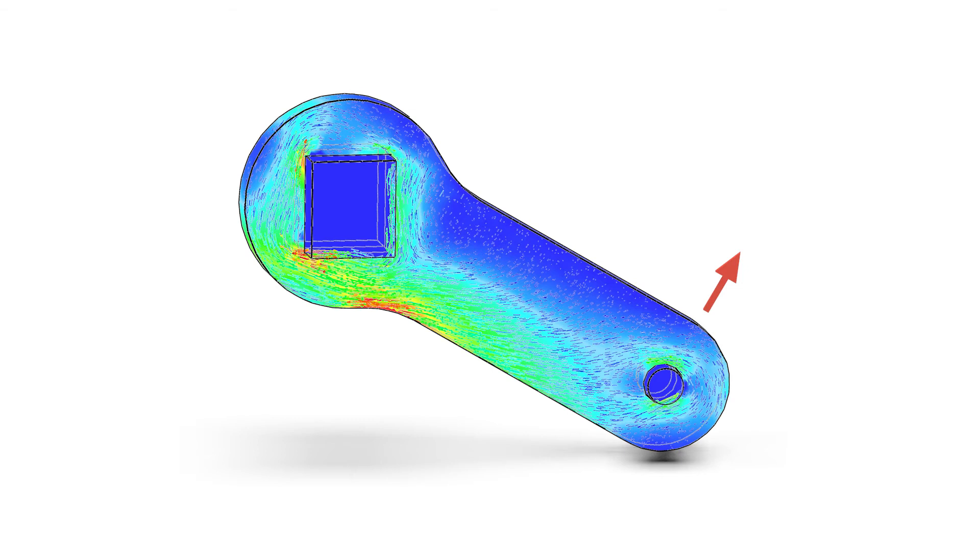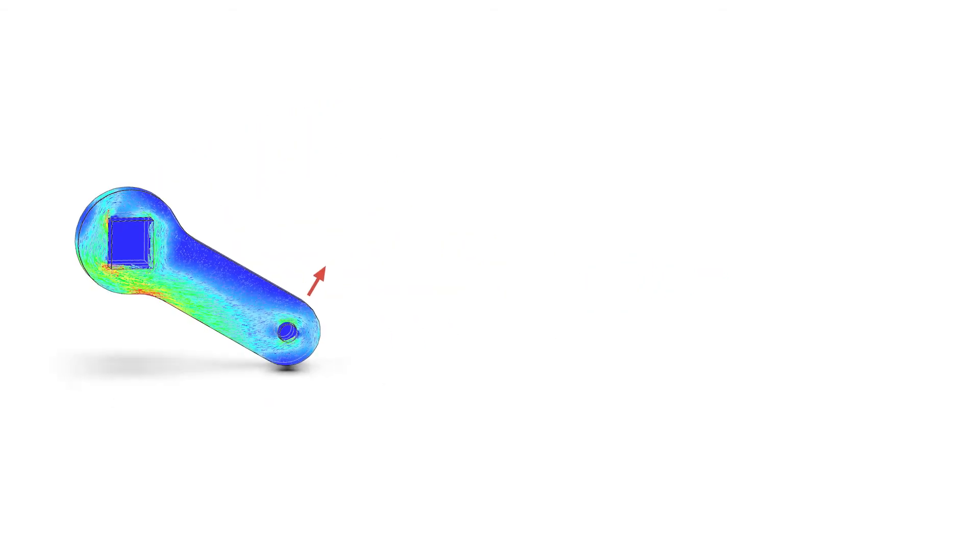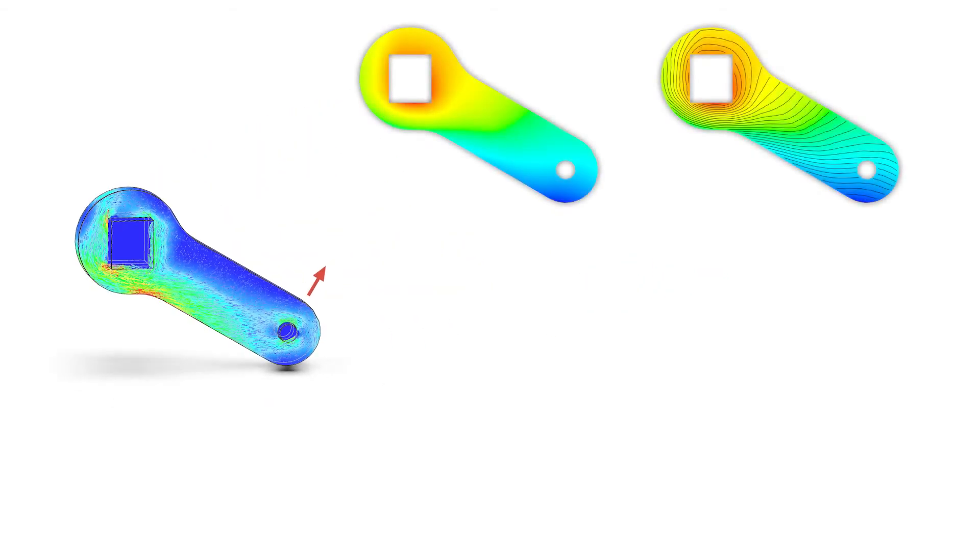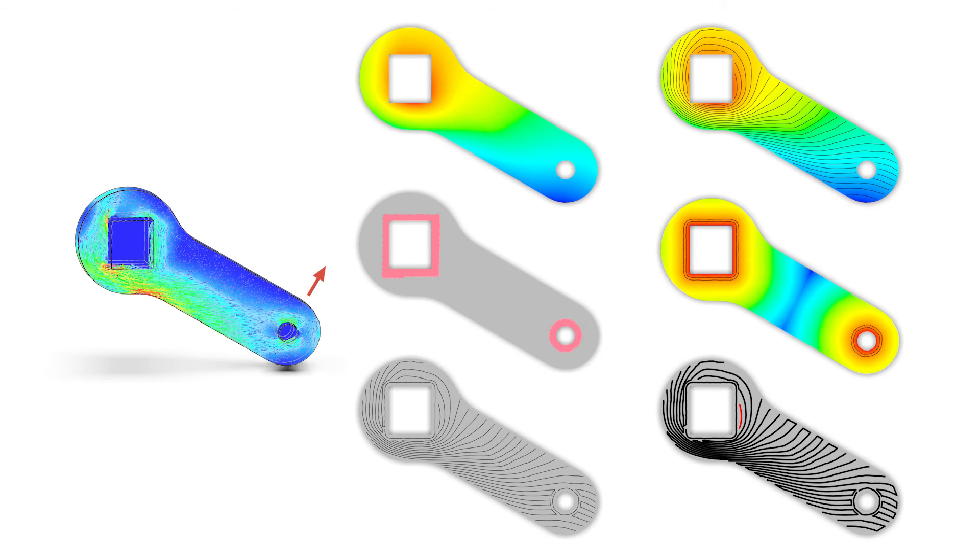Iso-curves of the scalar field are extracted as stress-oriented curves. Users can select specific boundary regions to be further reinforced. Boundary conformable toolpaths will be generated for these user-selected regions. The stress-oriented curves are trimmed and connected with the boundary conformable toolpaths.